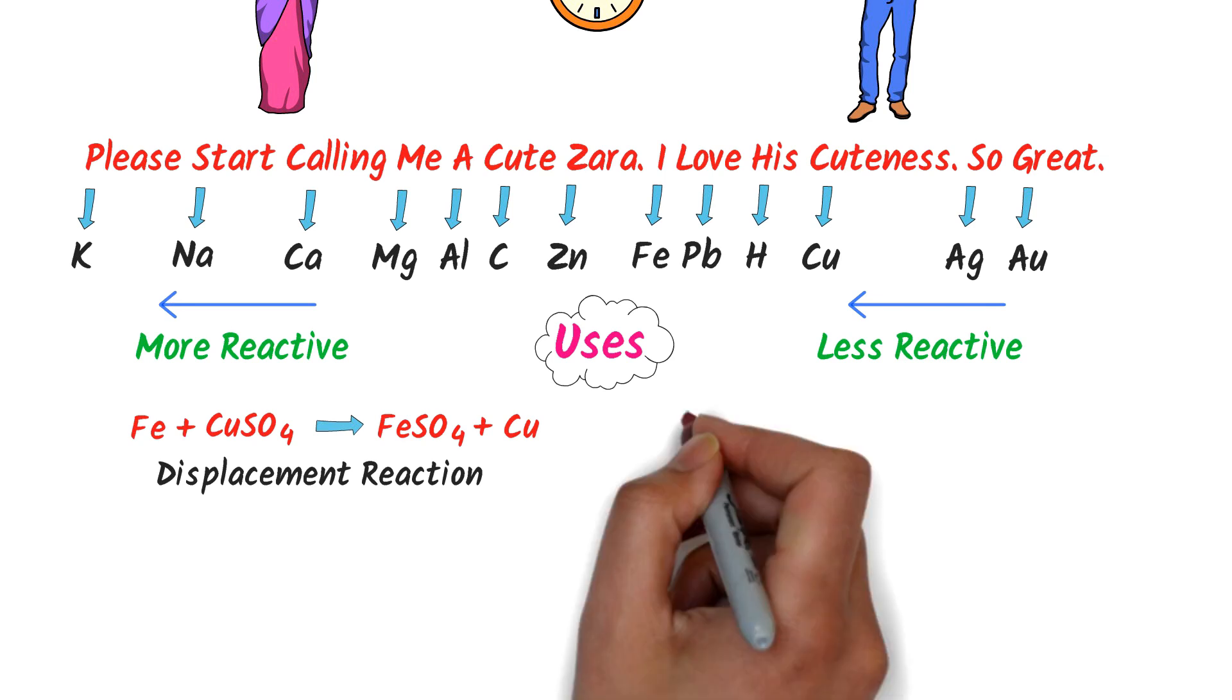Secondly, potassium plus sodium nitrate react together to form potassium nitrate plus sodium. We can see that in the metal reactivity series, potassium is above than sodium. So potassium is more reactive than sodium. That's why potassium is displacing the sodium from sodium nitrate.